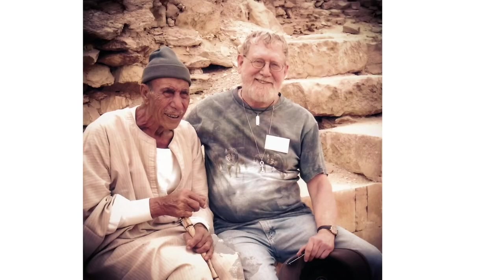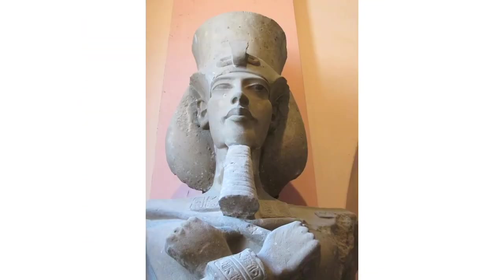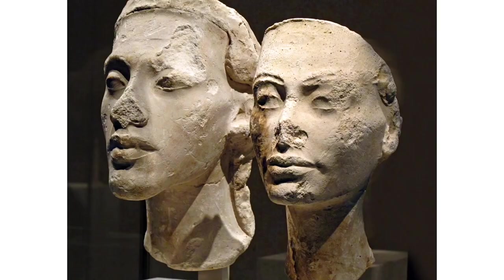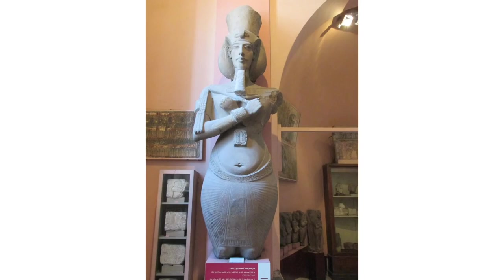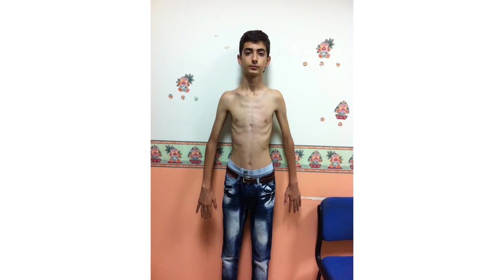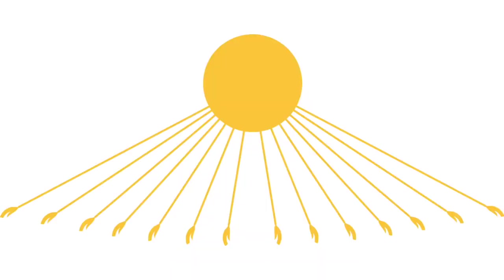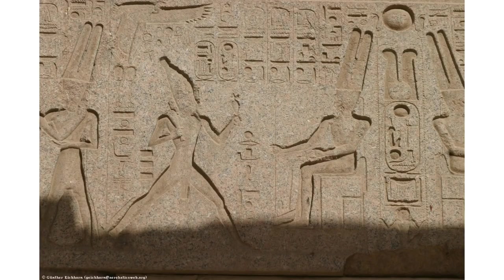The work regarding Akhenaten comes from these two experts. Akhenaten was called the heretic pharaoh because he did many things in his time that were regarded as being bad. We know that his bloodline comes from Amenhotep III, and he was born as Amenhotep IV but changed his name to Akhenaten. Some people think that he suffered from a disease called Marfan syndrome, and this is the symbol he used to represent the one deity, the Aten.